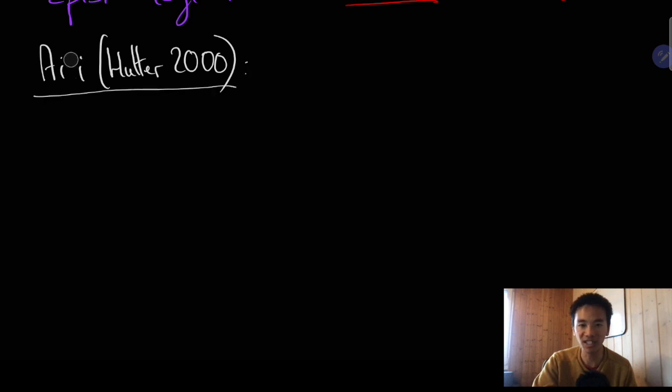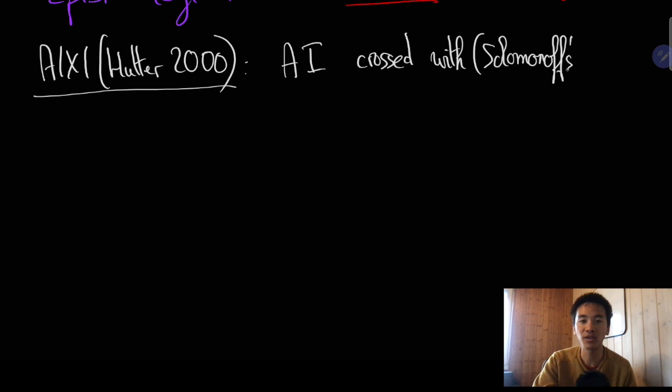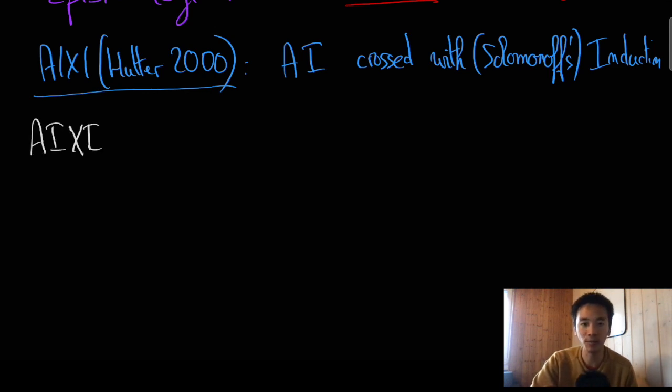AIXI stands for artificial intelligence crossed with induction. And in fact, he should say crossed with Solomonoff's induction. Today, I really wanted to present the setting of AIXI, how AIXI then works, and why it matters to understand how today's and tomorrow's algorithms work and ought to work.